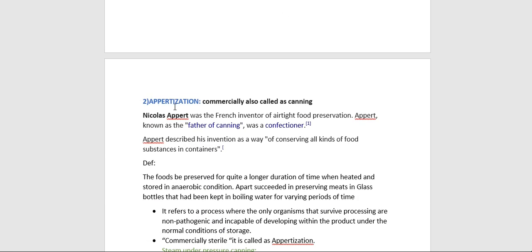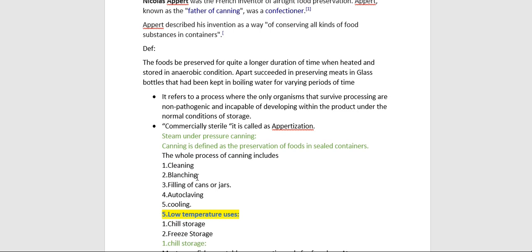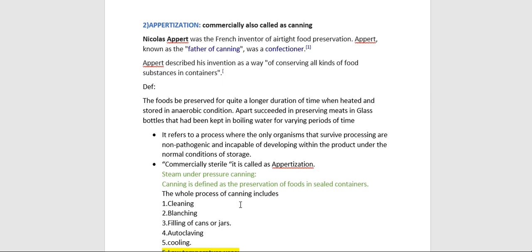The second heat process is appertization, commercially also called canning. This was first put forward by Nicholas Appert, who described his invention as a way of conserving all kinds of food substances in containers. Appertization is defined as preserving foods for a longer duration by heating and storing them in anaerobic conditions. Appert succeeded in preserving meals in glass bottles kept in boiling water for varying periods. Commercially, this is called sterilization. Canning is defined as preservation of foods in sealed containers through cleaning, blanching, filling of cans or jars, autoclaving, and cooling.